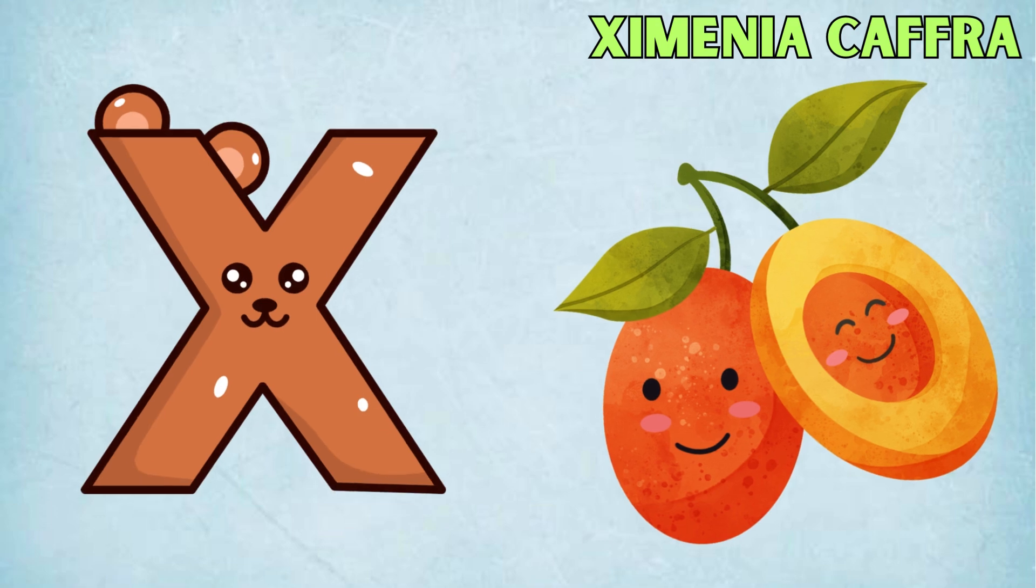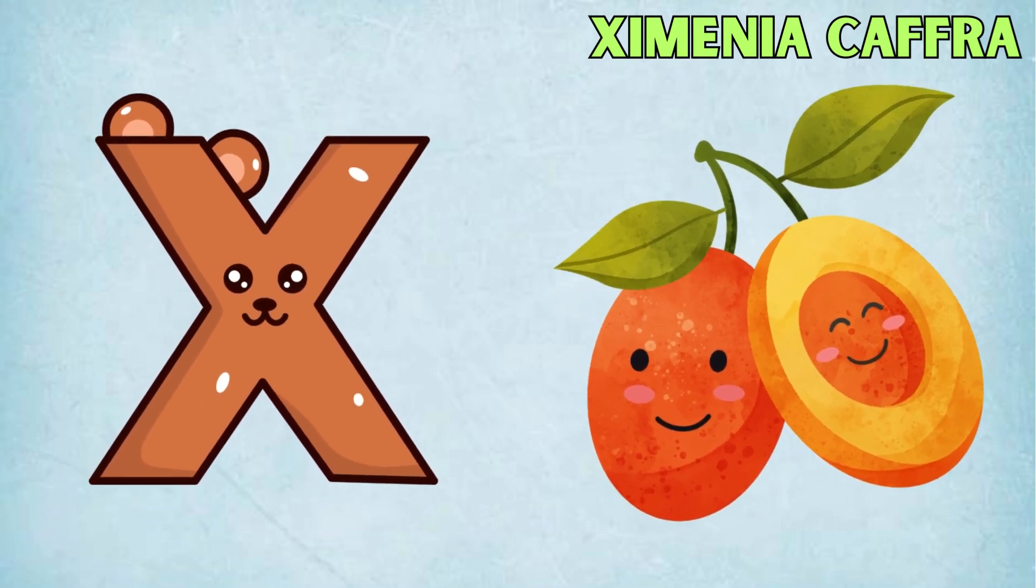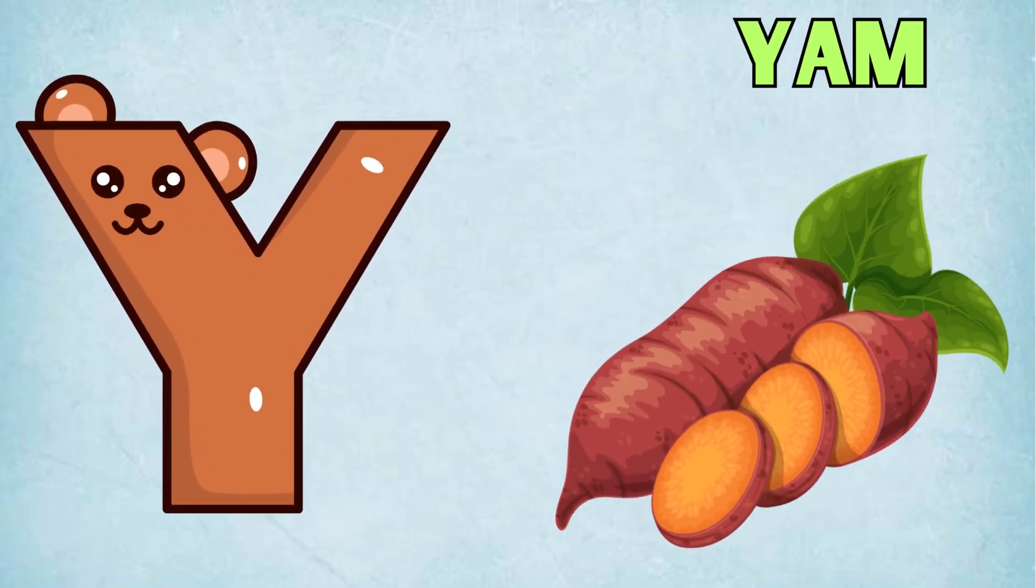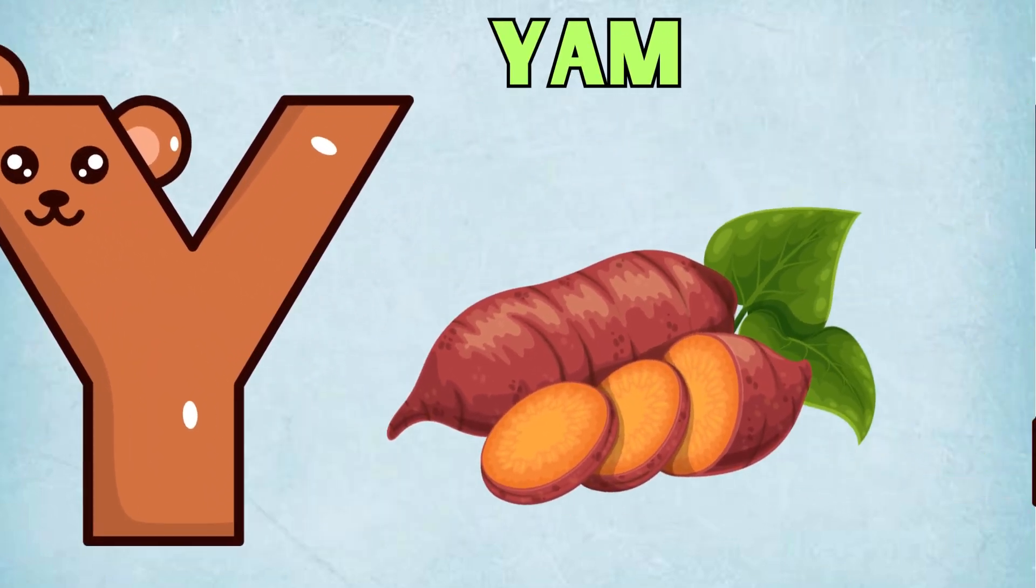X is for Xavania Khafra, X, X, Xavania Khafra. Y is for Yam, Y, Y, Yam.